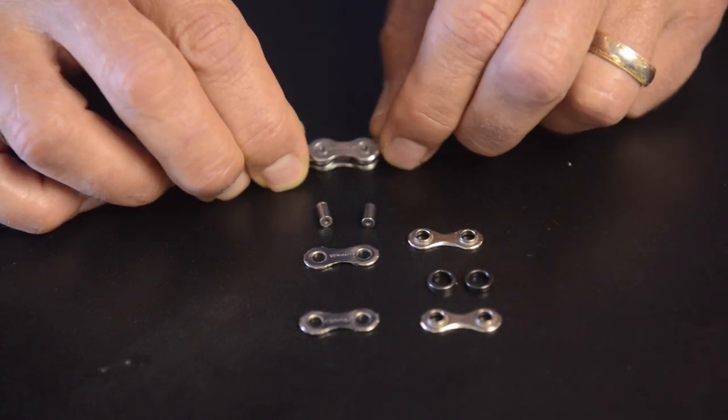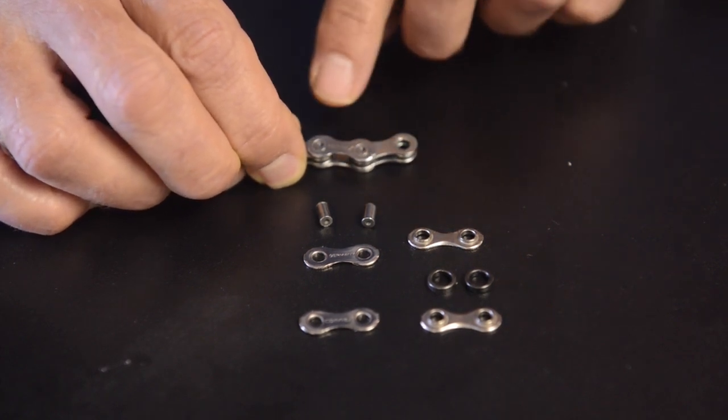When they're assembled, they form this part of the chain right there, the inner link and the outer link.